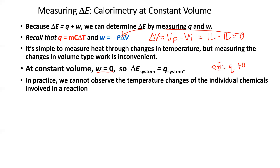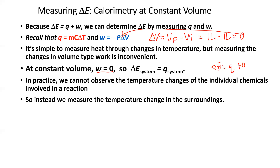In practice, we can't really observe the temperature changes of the system, because when we're talking about the system, we're talking about the chemicals in the reaction. We can't measure the individual temperature changes of the reactants. Instead, we can measure the temperature change of the energy transferred from the system to its surroundings, because we know that it's equal in energy, just opposite in direction. So if we get the energy of the surroundings, then we know the energy of the system — it's just an opposite sign, negative.